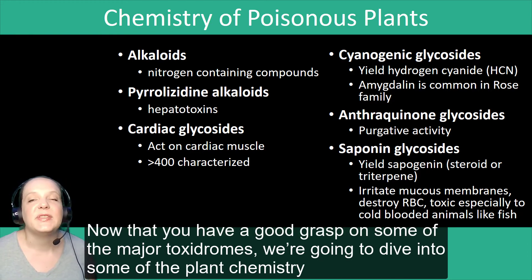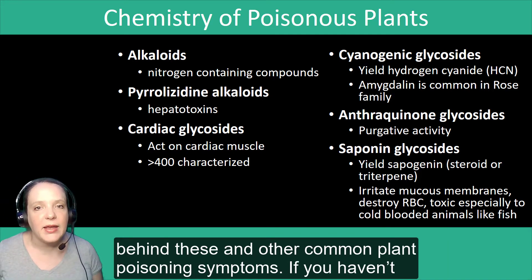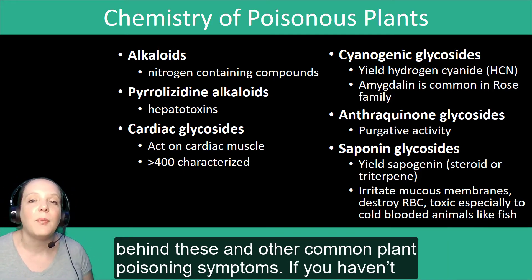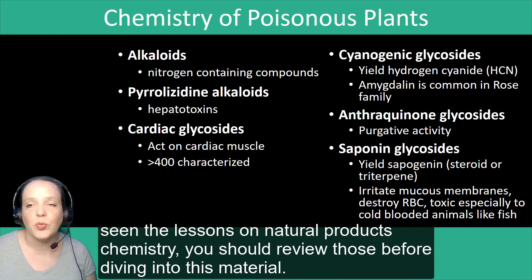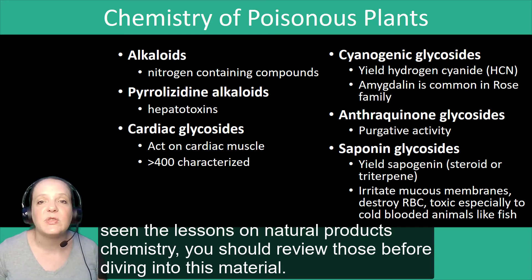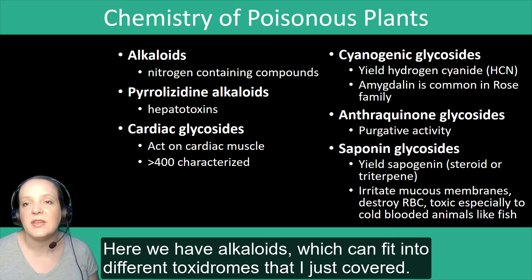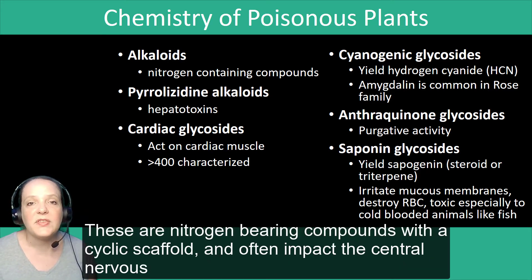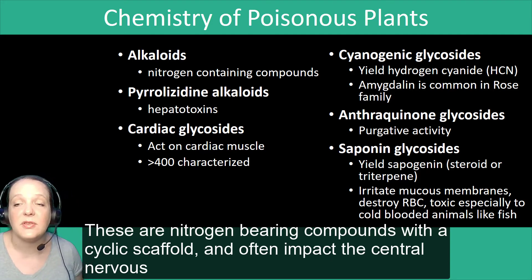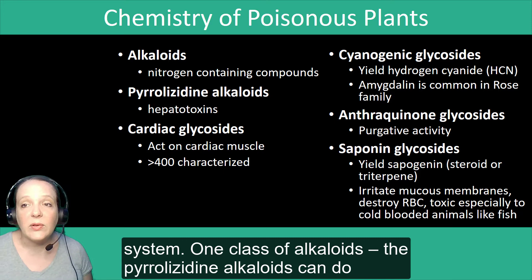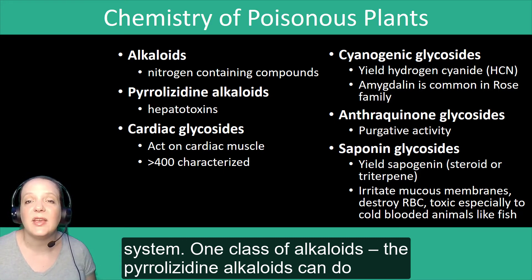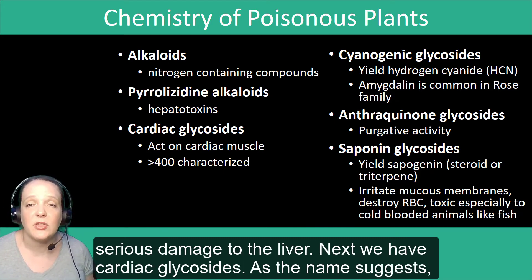Now that you have a good grasp on some of the major toxidromes, we're going to dive into some of the plant chemistry behind these and other common plant poisoning symptoms. If you haven't seen the lessons yet on natural products chemistry, you should definitely review those first. Here we have alkaloids, which can fit into different toxidromes. These are nitrogen-bearing compounds with a cyclic scaffold that often impact the central nervous system. One class, the pyrrolizidine alkaloids, can also do serious damage to the liver.